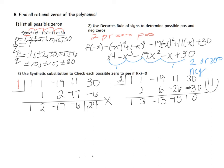Now that I've found a zero, I can use the reduced coefficients to check the rest, because factors of the larger polynomial are also factors of the quotient. Looking at the new constant −15, I can eliminate possibilities that don't divide into 15 — so 6, 10, and 30 are no longer possibilities. Only 1, 3, 5, and 15 remain.